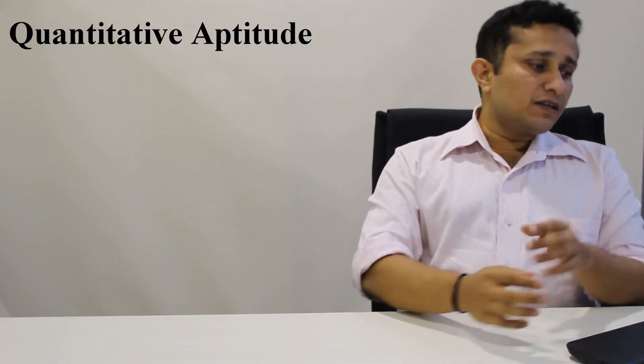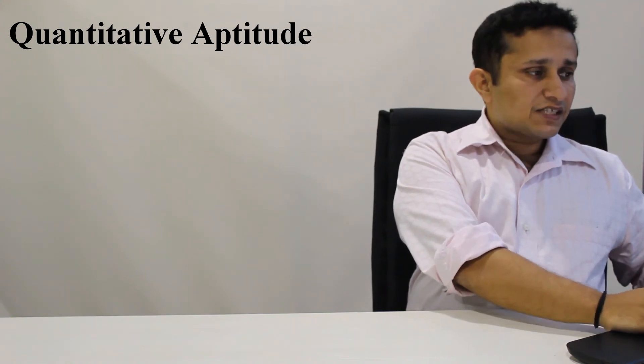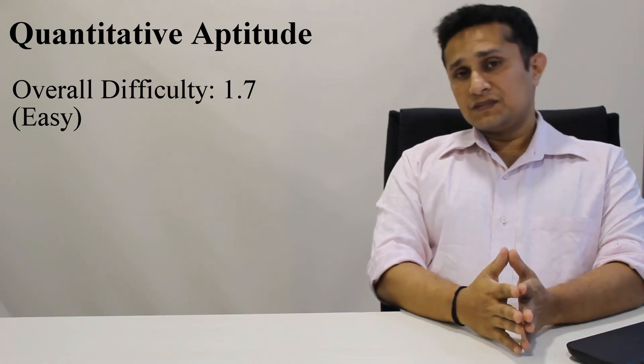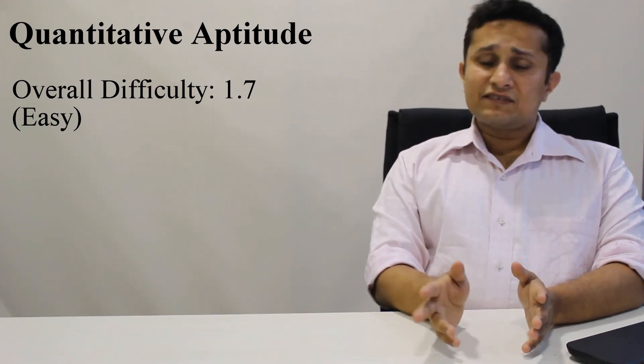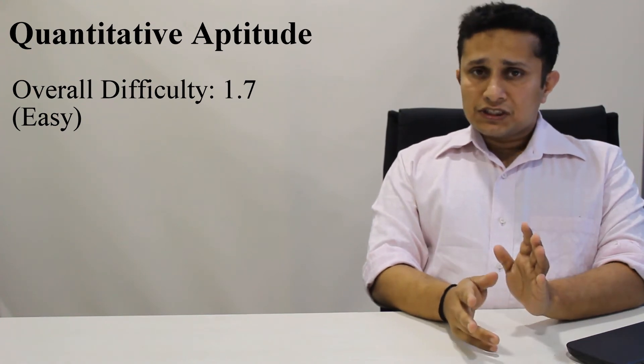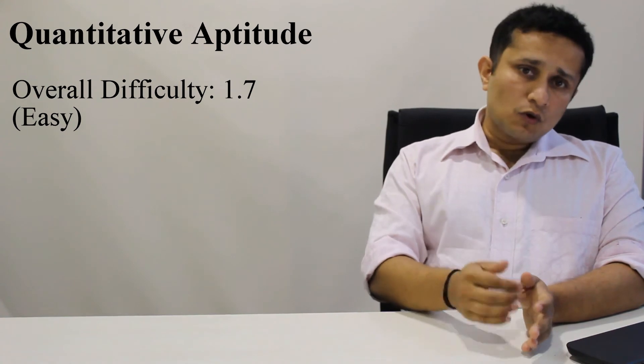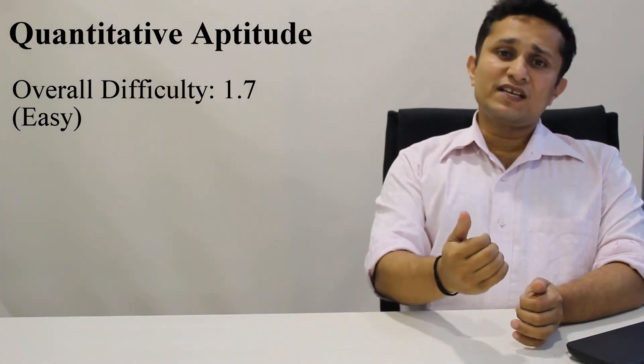Finally, let's move to the quant section which is typically the easiest section of the exam. Again here it was the easiest of the entire exam with an average difficulty of 1.7. In the exam you will probably get a difficulty of around 1.75 or 1.8. So this was slightly simpler compared to the exam. Now on the whole, if you look, the entire paper was more or less on the lines of what you would face in the exam.